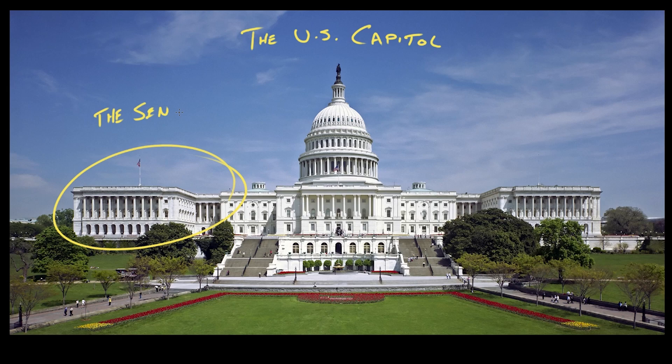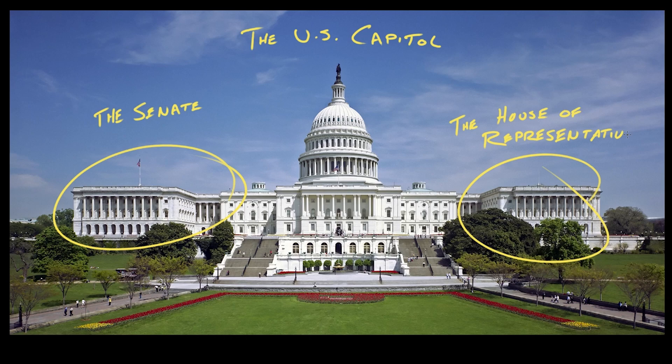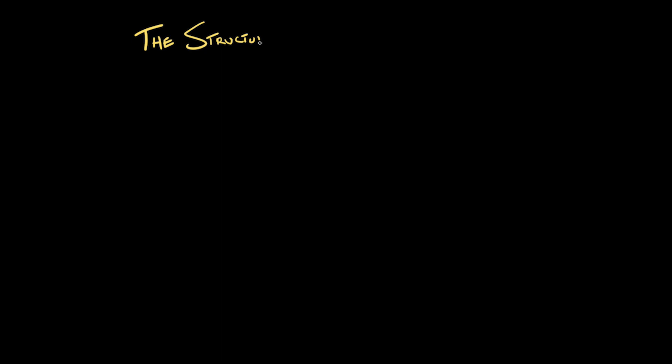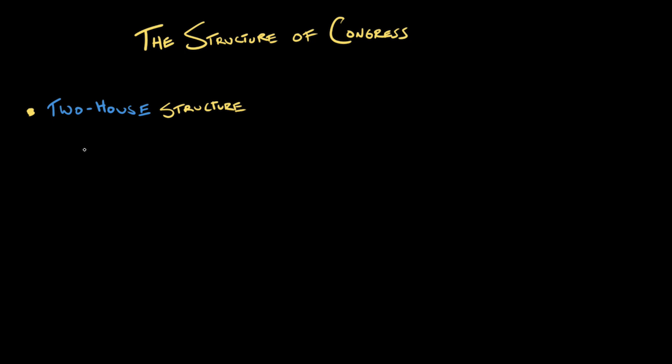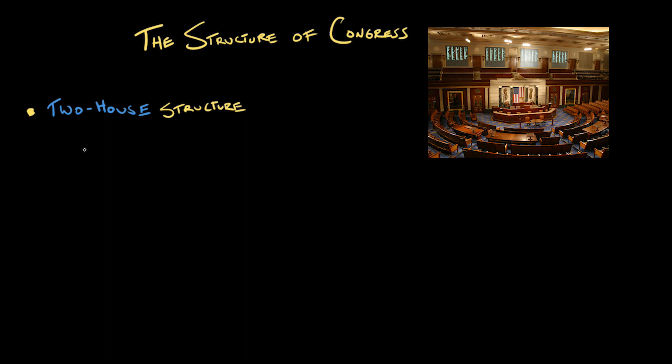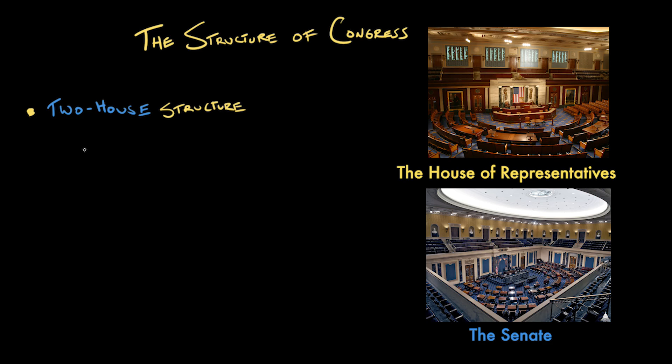Our legislative branch is made up of the Senate and the House of Representatives, but it didn't have to be that way. The framers settled on this two-house structure for several reasons. One is that it was a compromise between the small states and the large states. The large states wanted representation in Congress in accordance with population, while the small states were concerned they would be dominated. So the compromise was one House — the House of Representatives — largely apportioned based on population, and one House — the Senate — apportioned based on each state having two votes, no matter how small or large.